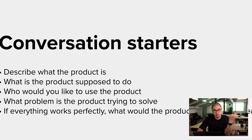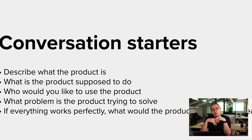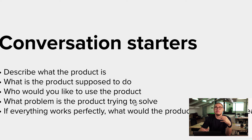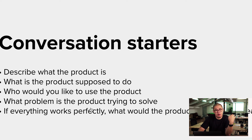In here I've got a list. The first one is 'describe what the product is.' So you'd ask, say, the marketing manager — 'Hey Dom, if this was a successful product, could you describe what the product is?' And then let them talk. There are a couple of other questions like 'What is the product supposed to do?' or 'Who would you like to use the product?' And sometimes there are quiet periods — if they haven't covered 'What problem is the product trying to solve?' you can ask that. From there, you'll gather a lot of information from the stakeholders.